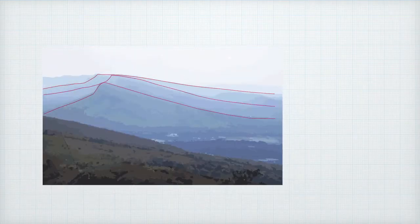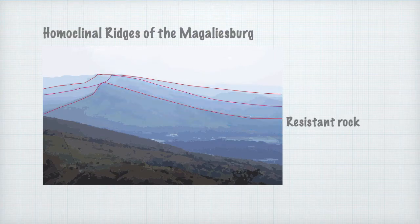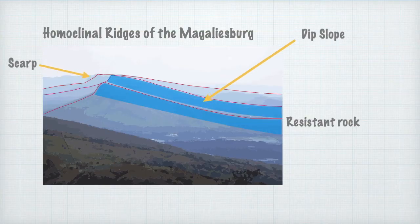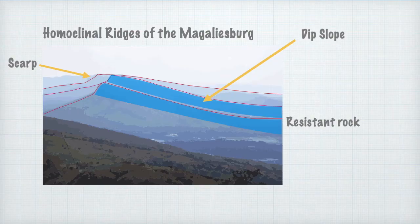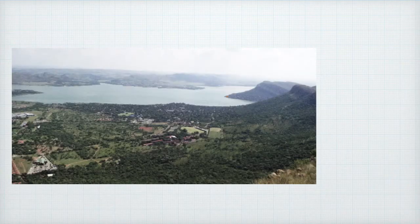Let's look at the homoclinal ridges that we find within the Magaliesberg range. Those homoclinal ridges consist of cap rocks that represent resistant rock, and then they have gently dipping slopes and steep scarp slopes. Those are the features associated with the homoclinal ridge. A homoclinal ridge is a number of hills that have a similar angle of dip — that's why they're called homoclinal.